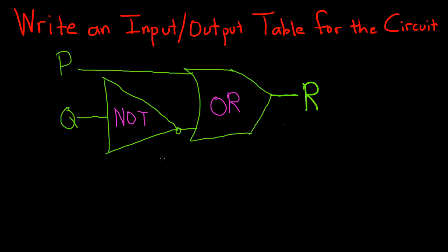Write an input-output table for the circuit. To do this, we'll make a table and list all the possible inputs, and then compute all the possible outputs R. So we have P, Q, and R.